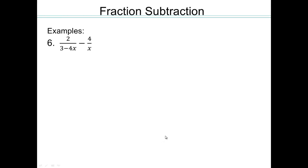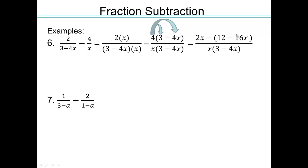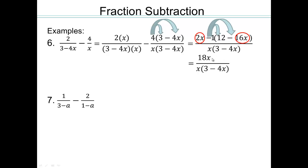All right, fraction subtraction. What do you think we should do? Same thing we did with addition — make equivalent fractions so that they both have the same denominator, because then we can just add or subtract the numerators. So first, we're going to multiply that out: 4 times 3 is 12, and 4 times negative 4 is negative 16. Subtracting means additive inverses, so it's as if there's a negative 1 there and you're doing distribution. So we have 2x minus negative, making it a plus 16x, giving us 18x, and negative 1 times 12 gives negative 12.